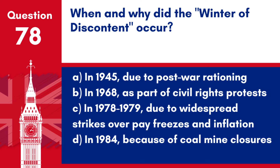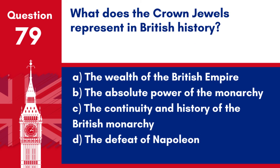Answer: c. In 1978–1979, due to widespread strikes, pay freezes and inflation. This period of industrial unrest significantly affected the UK's economy and public services.